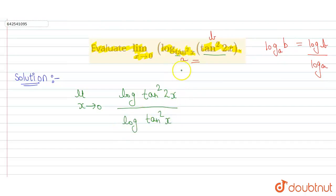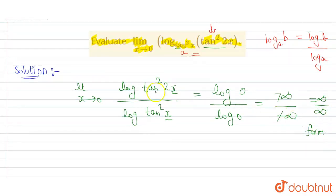Now we will put the limit and check. When x is 0, tan 0 is 0, so log 0 upon log 0. Log 0 tends to minus infinity, so minus infinity upon minus infinity. The minuses cancel, giving infinity upon infinity form. Since it is infinity upon infinity form, we will simplify it using L'Hospital rule.